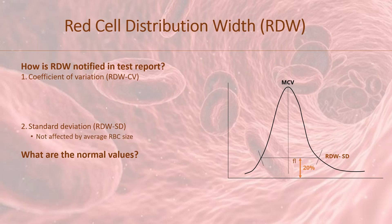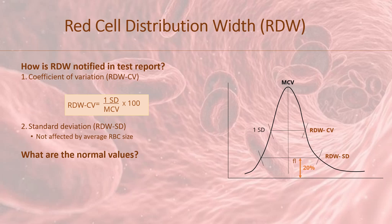RDW-SD is therefore not influenced by the average RBC size. RDW-CV, on the other hand, is calculated by dividing one standard deviation width of the histogram by the MCV times 100. It is expressed as a percentage. Don't worry, the machine will automatically calculate this for you. Since RDW-CV is mathematically derived from MCV, it is therefore affected by the average RBC size.